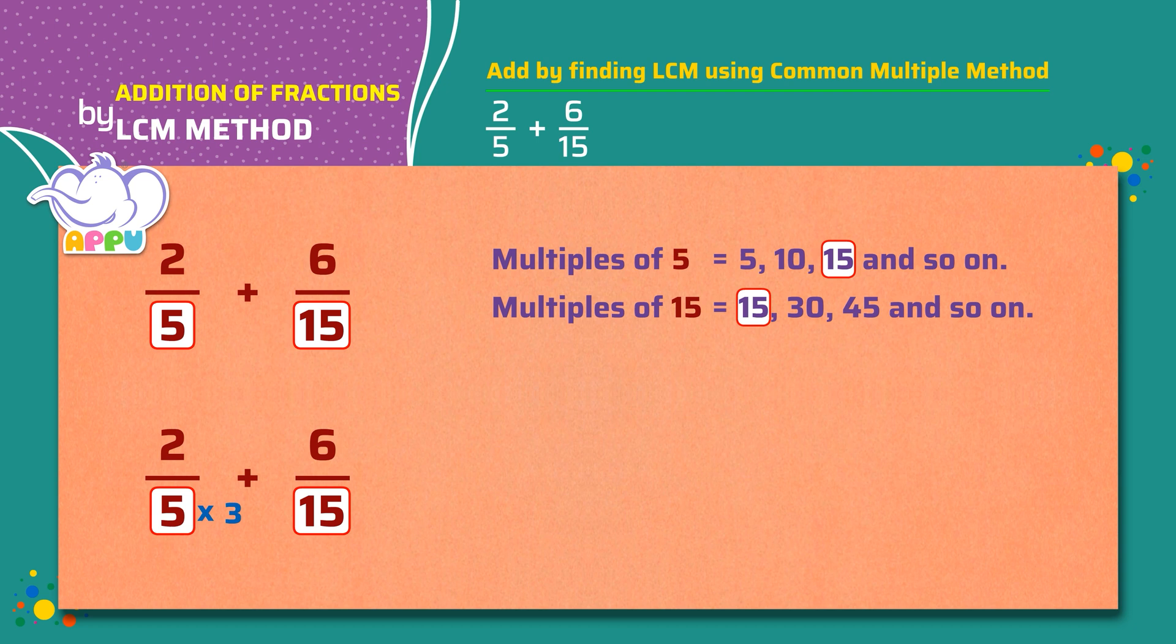Since we multiply the denominator, we multiply the numerator with the same number. That is, 2 times 3. We get 6 by 15.